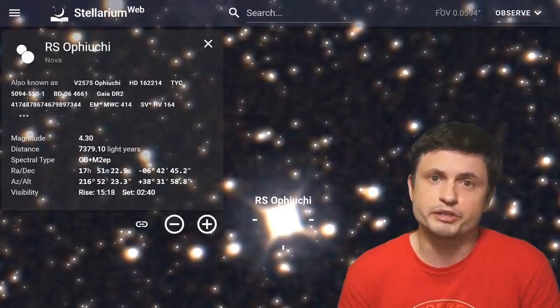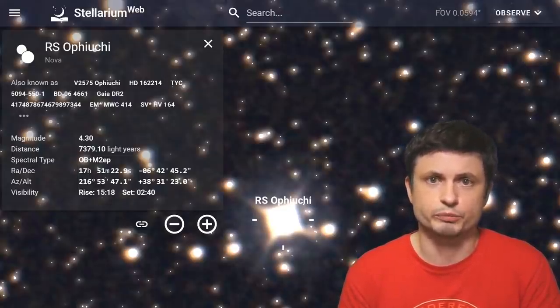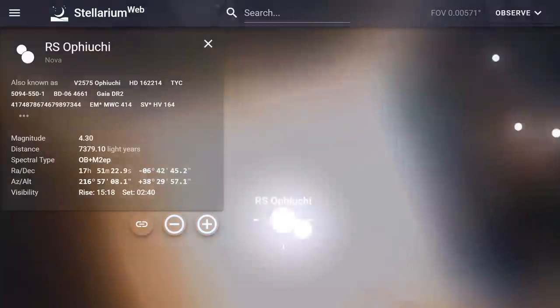And zooming into it, you'll even see what the images sort of look like if you were to look at it with the relatively large telescope. And here, if we keep zooming in, we'll even get to see what the binary system sort of looks like.